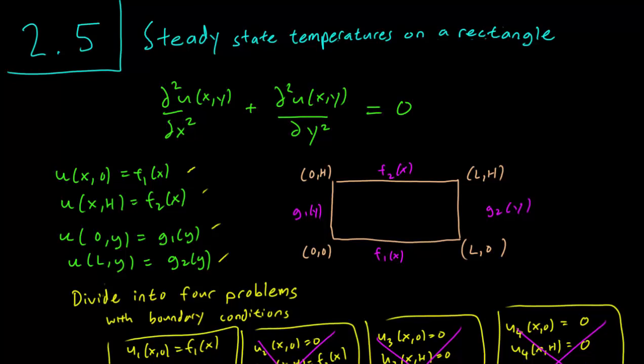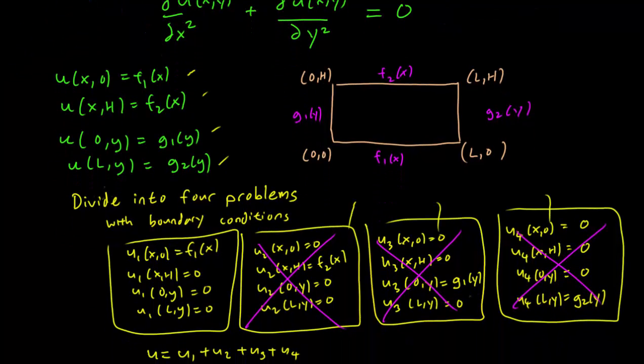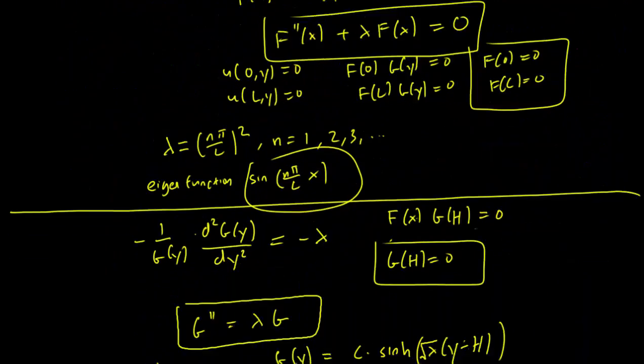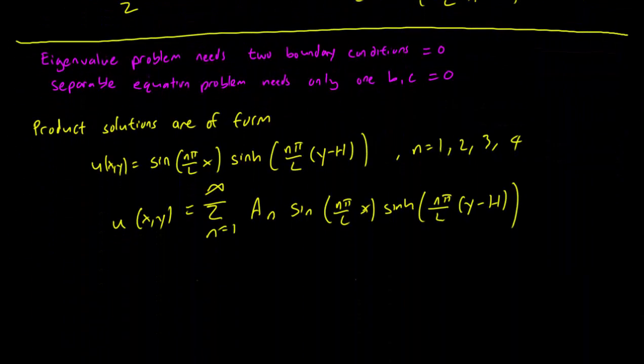To get the solution to our original problem, we need to do this problem four times with the four different boundary conditions here, here, and here, and add them all together. But let's figure out how to write down a_n.